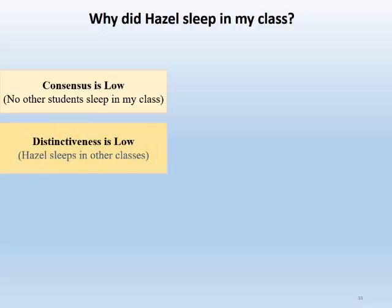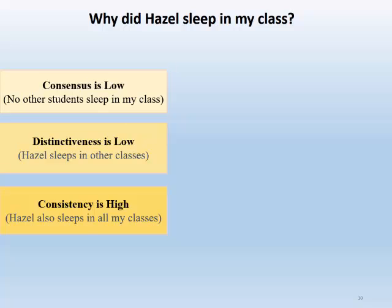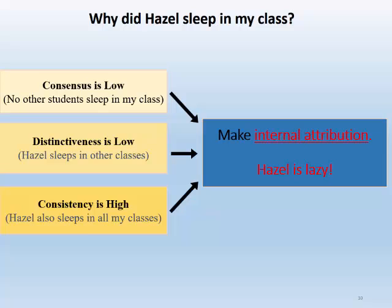In addition, I consider the distinctiveness of Hazel's behavior and find out that Hazel's behavior is not unusual for her because she sleeps in her other classes — distinctiveness is low. Lastly, I consider consistency and note that Hazel consistently sleeps in all of my classes — consistency is high. In this example, consensus and distinctiveness are low and consistency is high, so I am most likely to make an internal attribution and attribute Hazel's sleeping to some internal characteristic of Hazel, such as laziness.